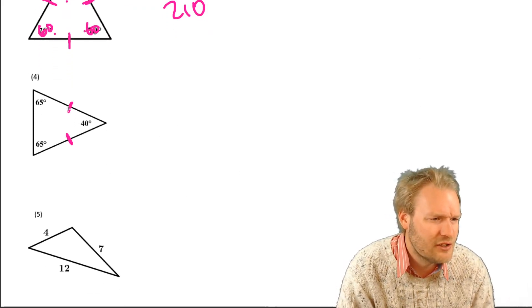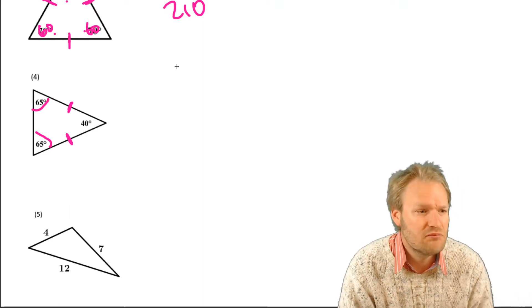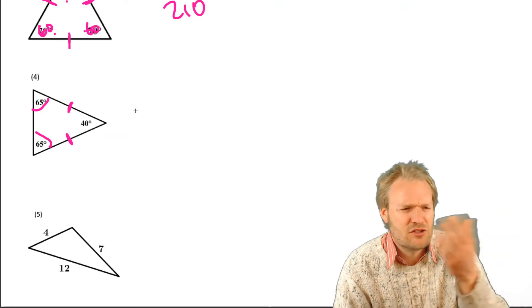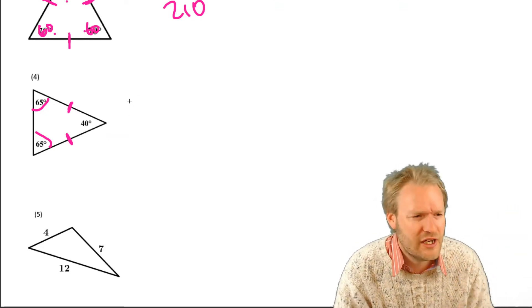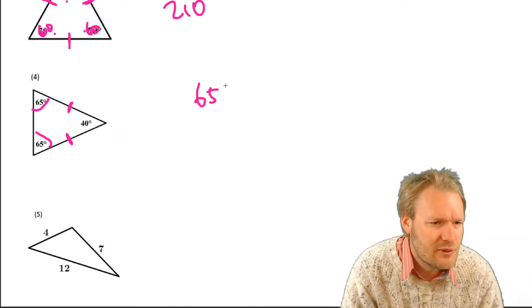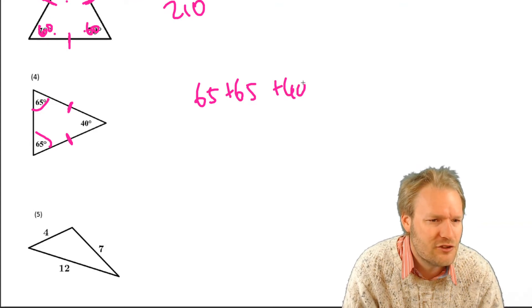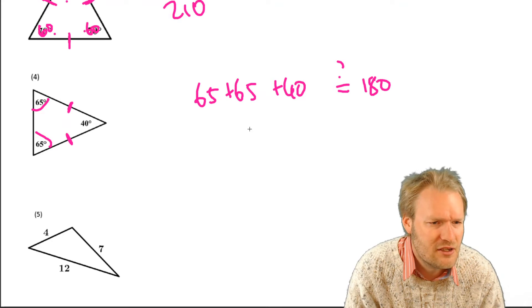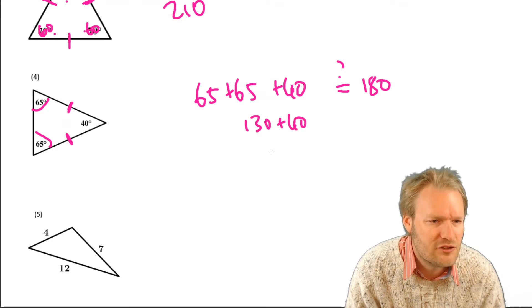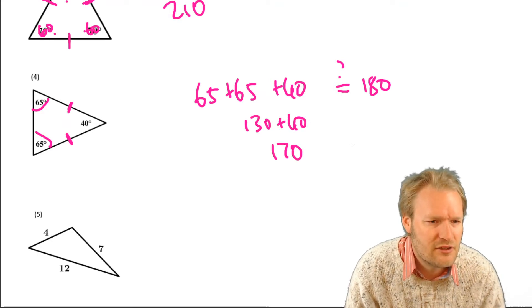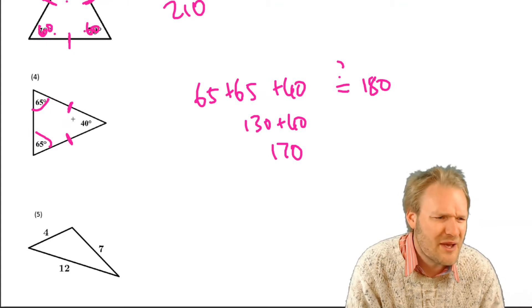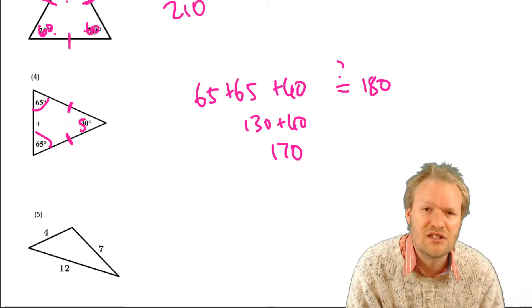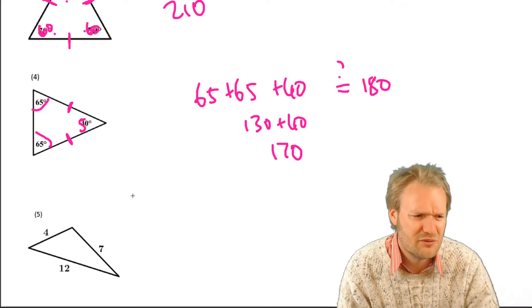Isosceles triangle. Base angles are the same. Looking good? Not like the first question. And the other thing that we've used quite a bit is sum of angles and triangles. So 65 plus 65 plus 40 must be 180. Right. So let's just check if that's the case. That's 130 plus 40. That's 170. Okay. So maybe this should have been 50. Or maybe these should have been 70. But one of those two might have fixed it.